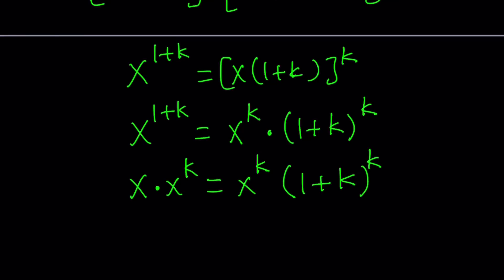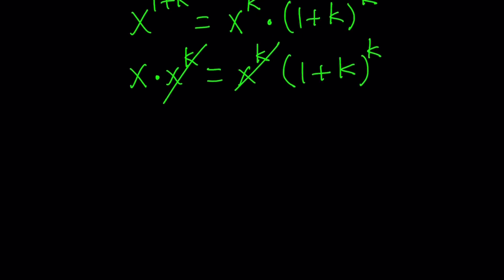Now since x does not equal zero, x to the power k does not equal zero because if the base is not zero then obviously the result can never be zero. So we can divide both sides by x to the k or just cancel it out. And we get a much simpler form which is x equals one plus k to the power k.